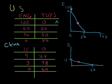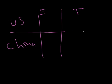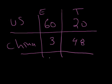What does that mean for world output? Well let's take a look at a new chart. The United States now is going to produce 60 engineering and 20 toys and China's going to produce 3 engineering and 48 toys. That means that the world is going to get 63 units of engineering and 68 units of toys. Look at these numbers.